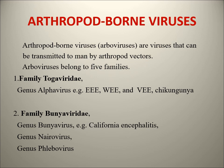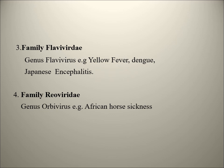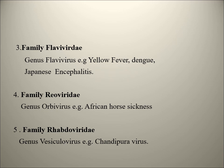Then comes family Flaviviridae, which is very important. Under this, the genus Flavivirus contains the most clinically important viruses - Yellow Fever, Dengue, and Japanese Encephalitis all come under family Flaviviridae. Then family Reoviridae contains the Colorado Tick Fever virus among others. Finally, family Rhabdoviridae includes the Vesicular Stomatitis virus and the Chandipura virus, for which a few cases have been reported.